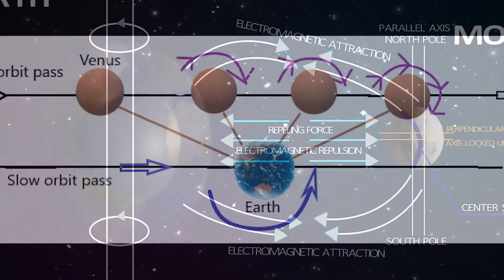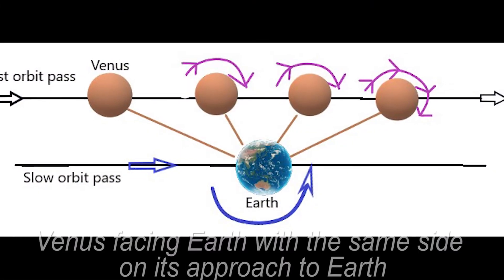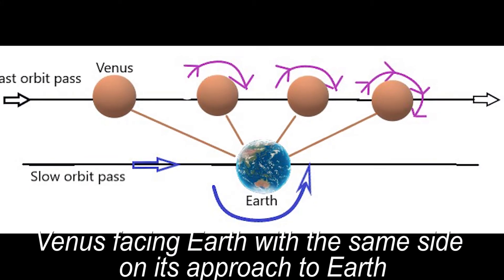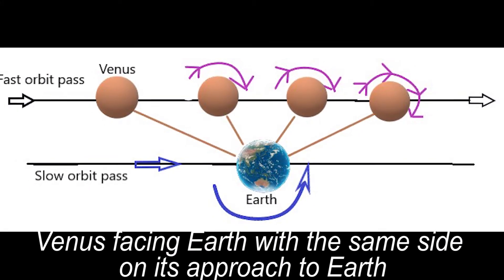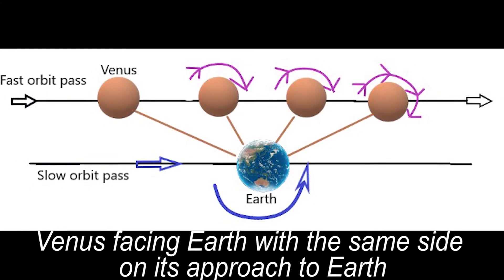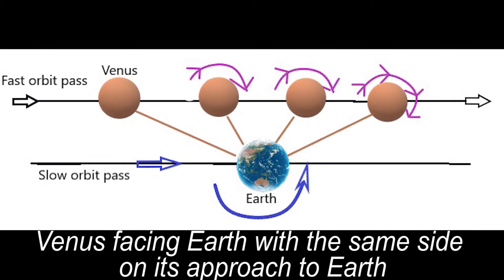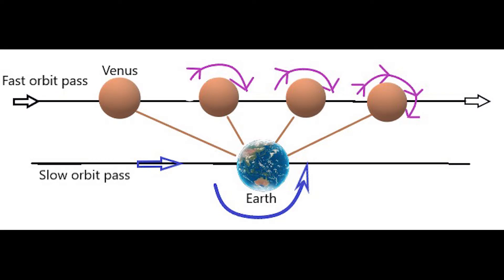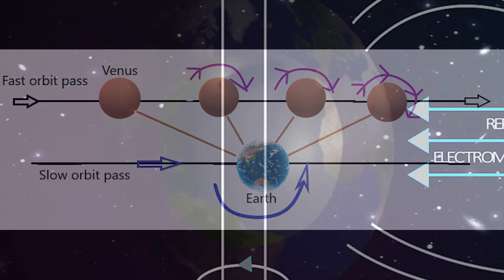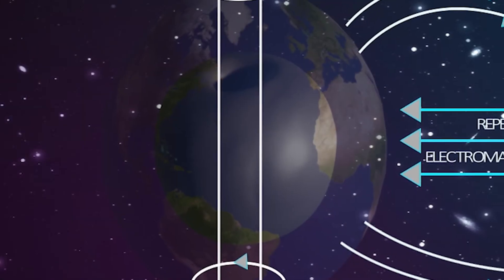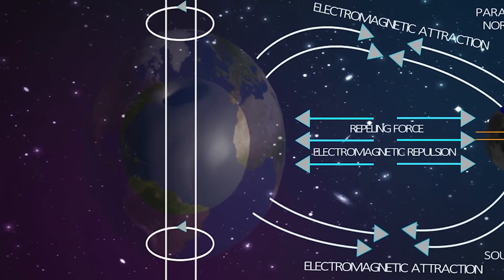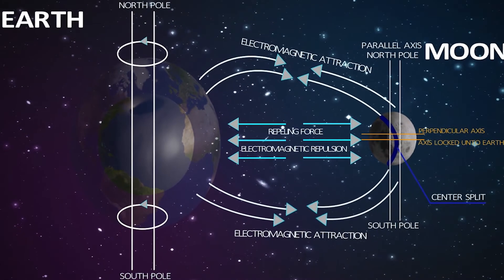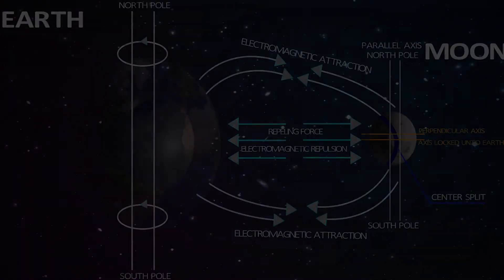And this is why Venus faces a fixed direction during its orbit around the sun, while its north and south pole axis is locked in parallel onto the sun's polarity. If you'd like more of an explanation on the two-way gravitation lock, I would recommend watching the first episode.